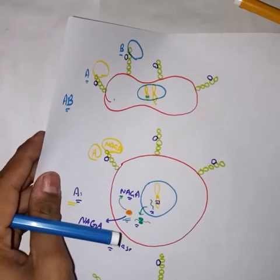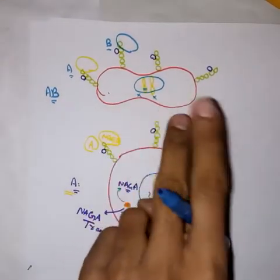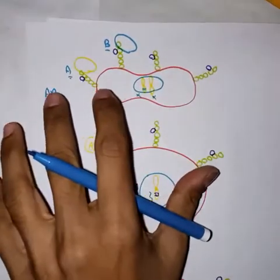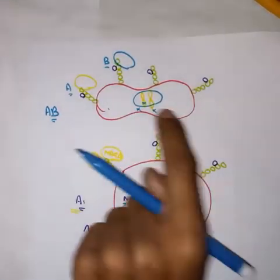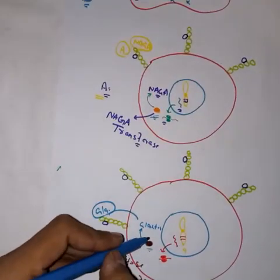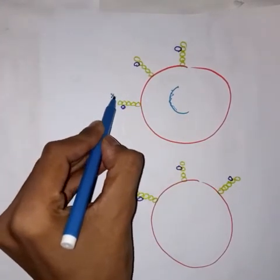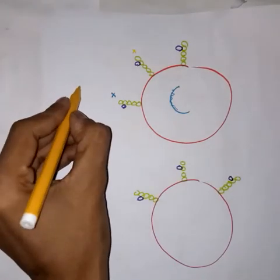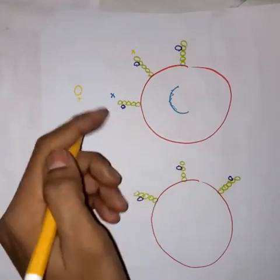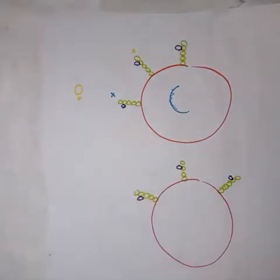If neither gene expresses — neither for NAGA transferase nor for galactose transferase — it means H antigen is present, but neither galactose nor NAGA will be transported onto the H antigen. Only H antigen is present. This type of blood group will be called O blood group, because A antigen is not present and B antigen is not present — only H antigen is present.